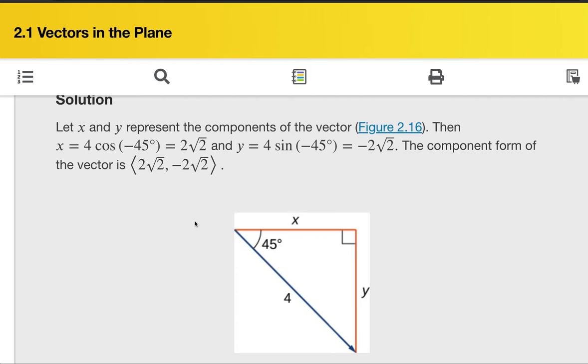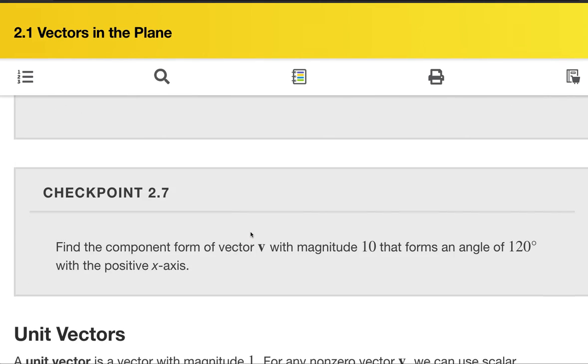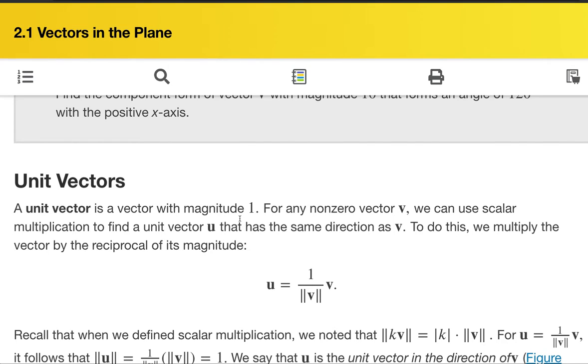Magnitude, that's the length, direction, could be given by an angle, hopefully you see from this point, from this example here. One more example, one more topic. Many times, we know vectors.